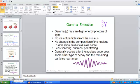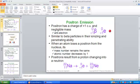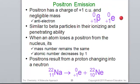Let's look at positron emission. Positrons are known as anti-electrons. Positrons have a charge of plus 1 Coulomb unit and they have a negligible mass. They are similar to beta particles in their ionizing and penetrating ability. When an atom loses that positron from the nucleus, it remains the same in terms of mass number, but the atomic number decreases by 1, decreases by 1, opposite effect from beta.